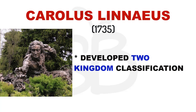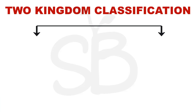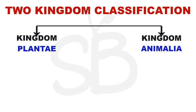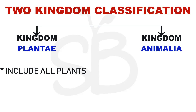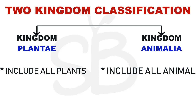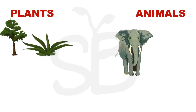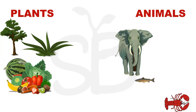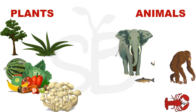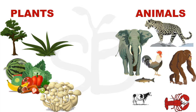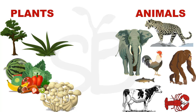We have two Kingdom Classifications. Almost all living organisms we classify into two groups: Kingdom Plantae and Kingdom Animalia. Plantae includes all plants and Animalia includes all animals. That's why we accept this classification — Two Kingdom Classification — because plants and animals are easy to distinguish.